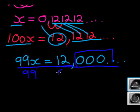Divide by 99. So on both sides, I divide by 99. On this side, I get x. And on that side, I get 12 over 99.